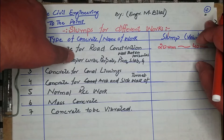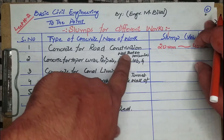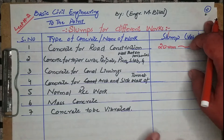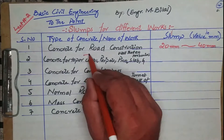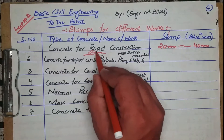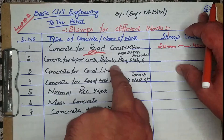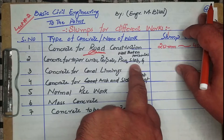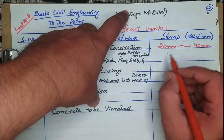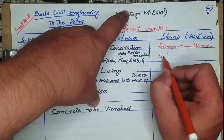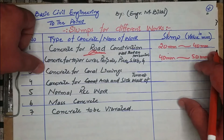The second one is concrete for curb, parapet, pier, or slab — these are horizontal elements. A curb is the edge structure along a road. The minimum and maximum slump for this type of concrete is 40 mm to 50 mm.